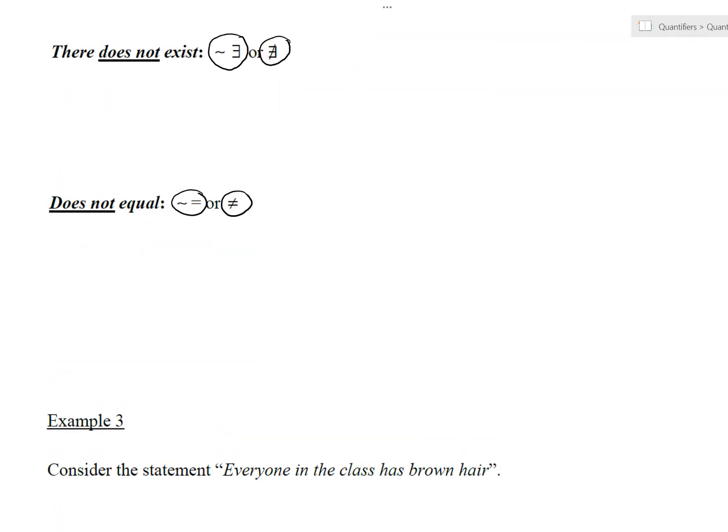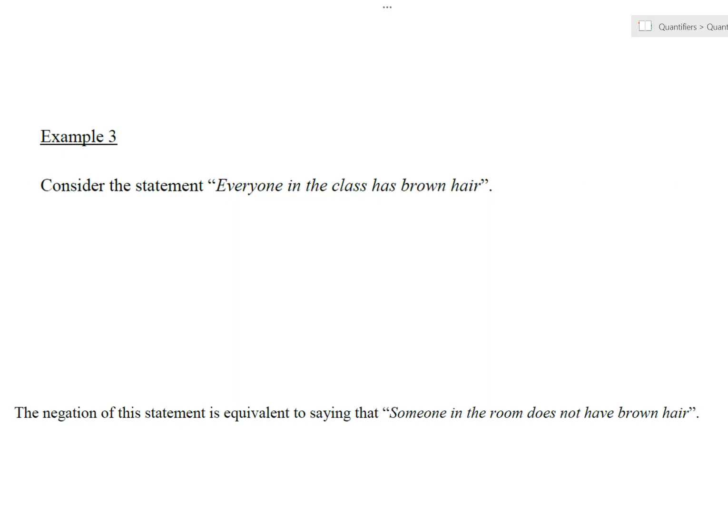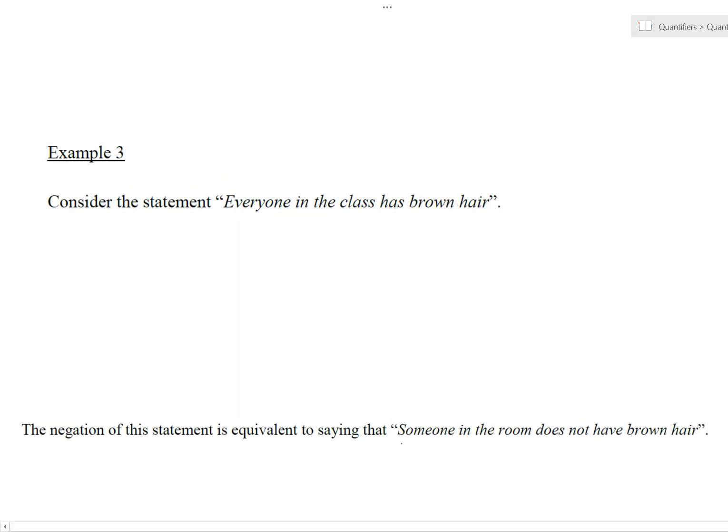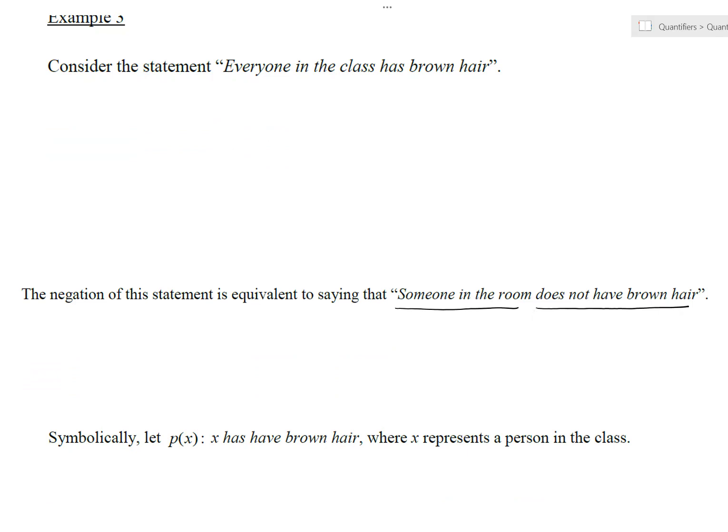Here's another example. Consider this statement. Everyone in the class has brown hair. So it's just a statement, it's either true or false. Say you're in a class. Then the negation of this statement is equivalent to saying someone in the room does not have brown hair. Think about it. For all the people in the class, they got brown hair. Then the negation of that statement is there's got to be at least one person in the room that does not have brown hair.